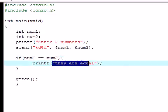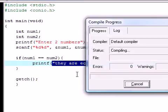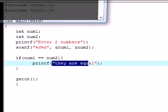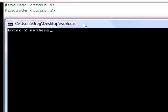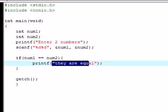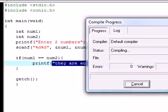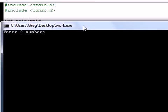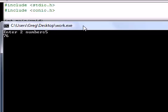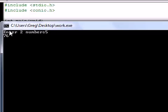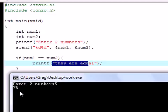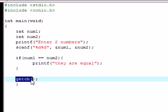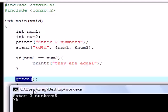If they enter two values that are exactly the same, our program is going to write they are equal. Let me compile and run this. Enter two numbers, how about five and five, enter. They're equal. Now let me run this again and show you guys what happens if they aren't equal. Enter two numbers, five and 76. It just goes to the rest of the program and it doesn't do anything at all.